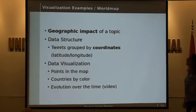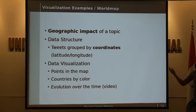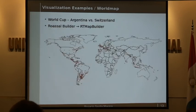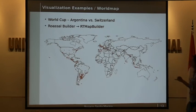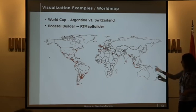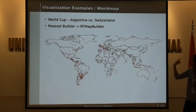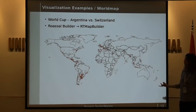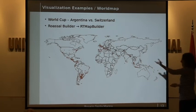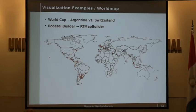The next example is a world map where we can see how a topic impacts around the world. We use geo-tagged tweets, which have information of latitude and longitude where the tweet was made. First, we analyzed Argentina versus Switzerland in the World Cup again, and we put every tweet as a point in the map. You can see that around the world, there is Twitter activity, so that topic influences people.